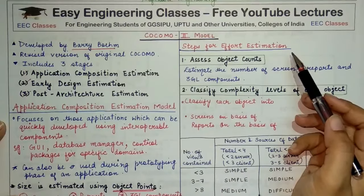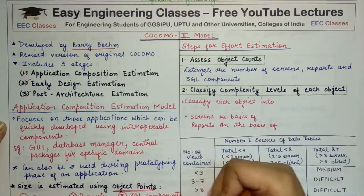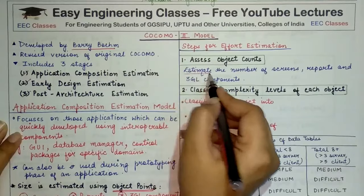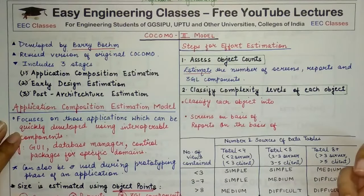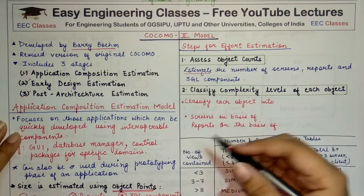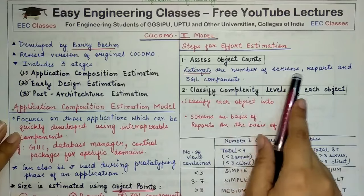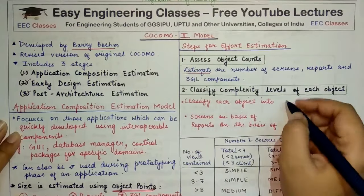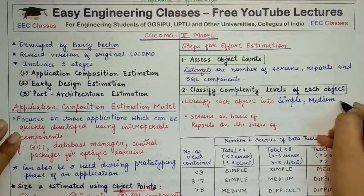Now, how do we estimate effort through object points? First, we assess the object counts — that is, the number of screens, reports, and 3GL components. After we have the count, we then determine the complexity for each object. Complexity means that every object is classified into one of three categories: simple, medium, or difficult.